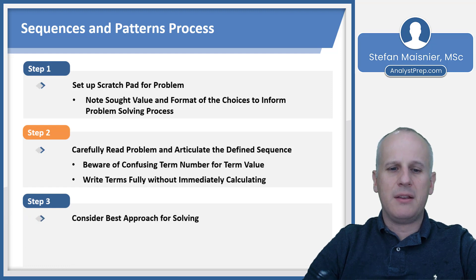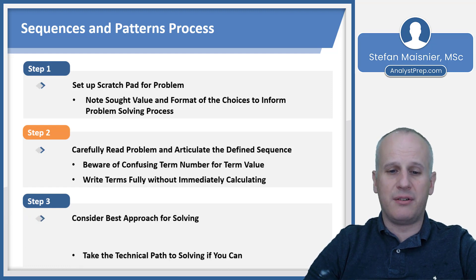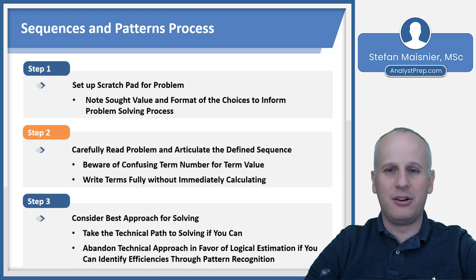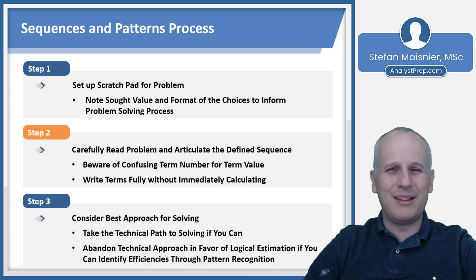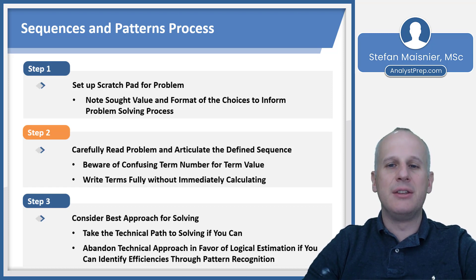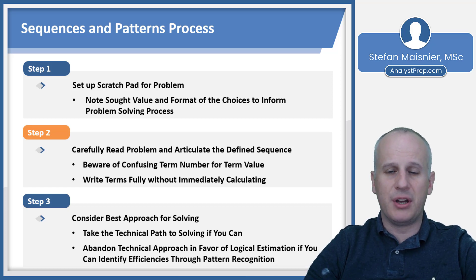Step three, consider the best approach for solving. If you can take a technical path, go ahead — it's probably most effective and efficient. If you can't find a clear technical approach, you can abandon it in favor of logical estimation or potentially back-solving. If you recognize efficiencies through pattern recognition, you can do some logical evaluation, like we did with the example moments ago.